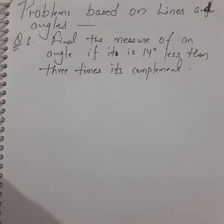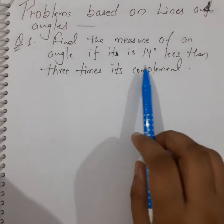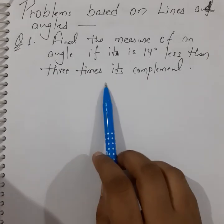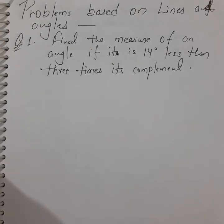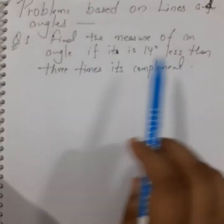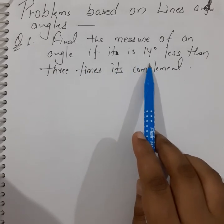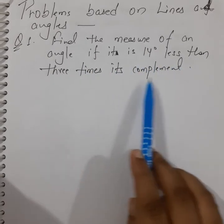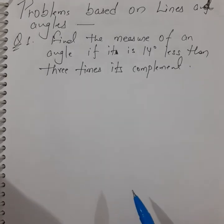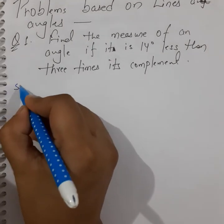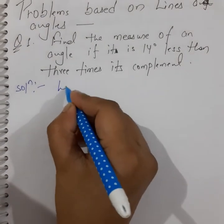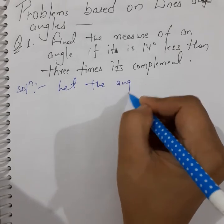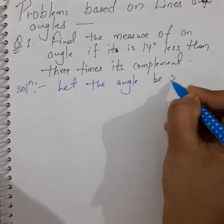The first problem is: find the measure of an angle if it is 14 degrees less than 3 times its complement. Read the question carefully. We don't know the angle, so we have to assume a variable for it. Let the angle be x degrees.